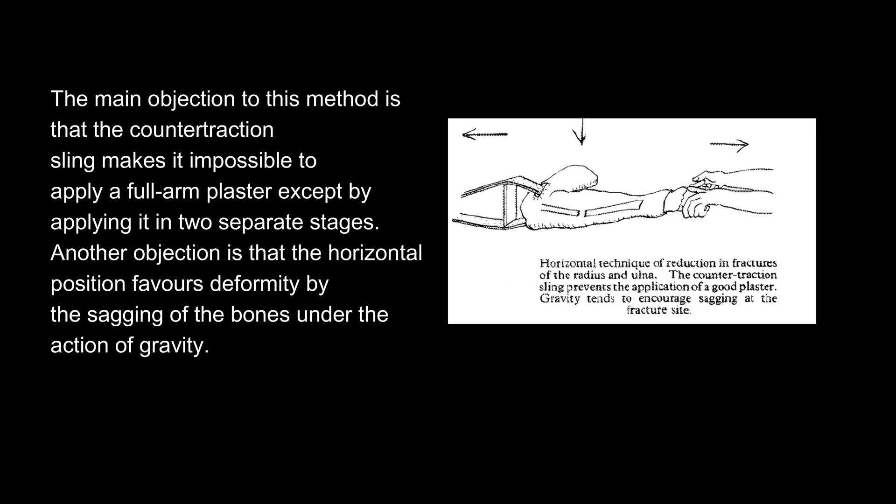The main objection to this method is that the counter-traction sling makes it impossible to apply a full-arm plaster except by applying it in two separate stages. Another objection is that the horizontal position favors deformity by the sagging of the bones under the action of gravity.